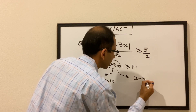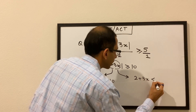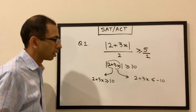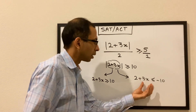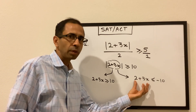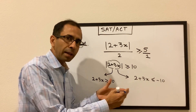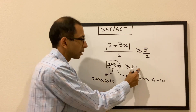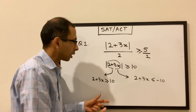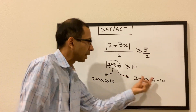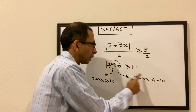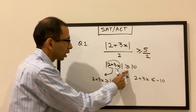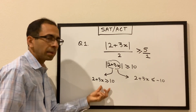The second scenario is that the value of this entity can be less than or equal to minus 10. So 2 plus 3x is less than or equal to minus 10. Let's say it equals minus 20 or minus 50 — the absolute value of that would still be greater than 10. So when we deal with a negative value, we flip the inequality sign.